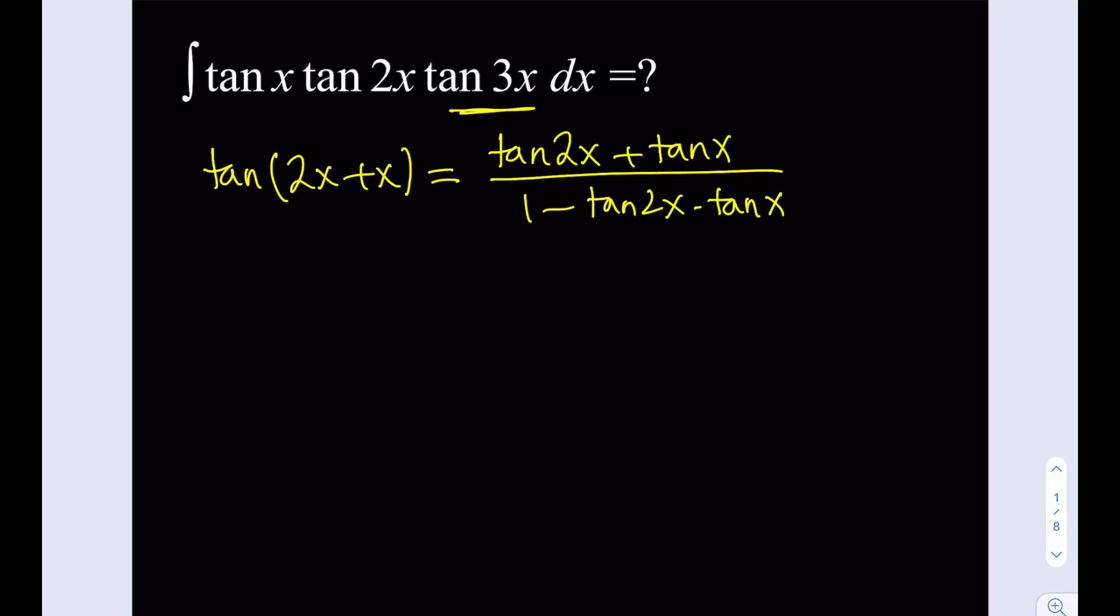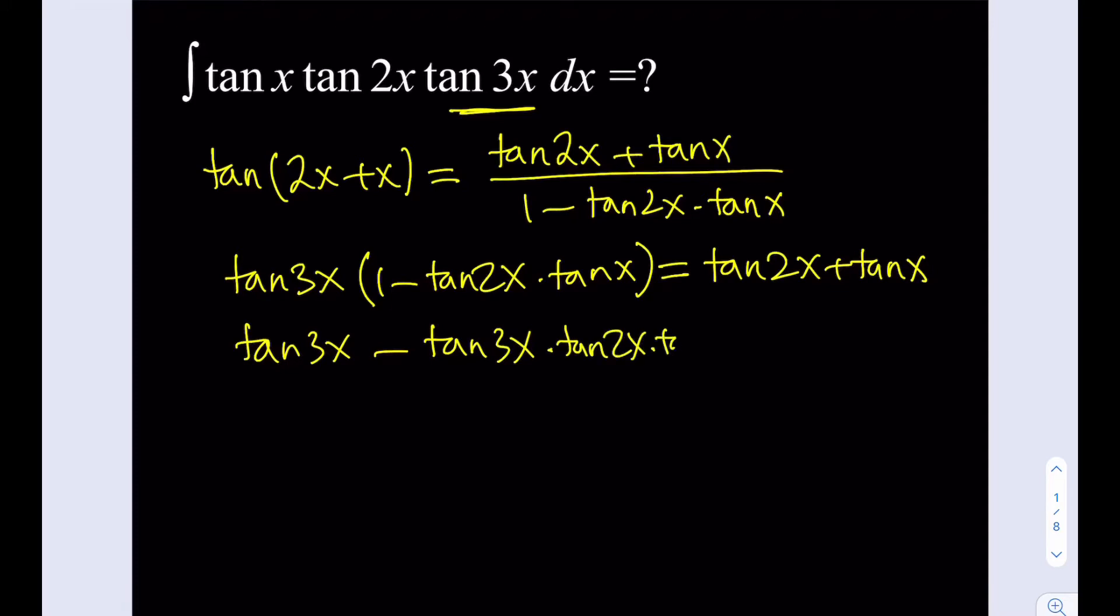Okay, so by using the sum formula we can write this. And on the left-hand side we have tangent 3x. So if you cross-multiply this expression, we're actually going to get something interesting here. Go ahead and cross-multiply. That's going to equal the numerator. And then I'm just going to distribute the tangent 3x, tangent 3x minus tangent 3x times tangent 2x times tangent x. And that's going to give me the sum of tangent 2x and tangent x.